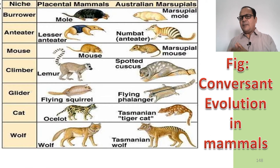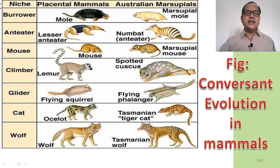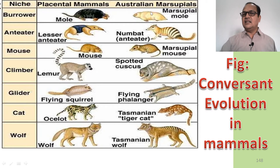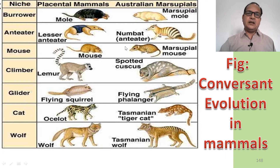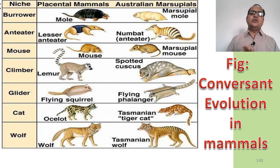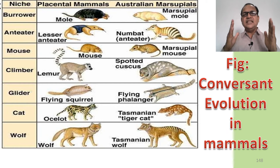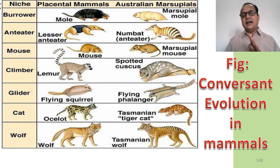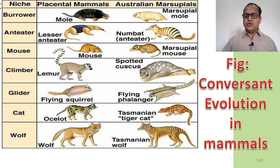The opposite of divergent evolution is convergent evolution. In the Australian region, marsupials and placental mammals, though from different lineages, became identically similar due to living in the same environment and similar habitats. Different species coming close to each other and becoming morphologically similar is called convergent evolution.